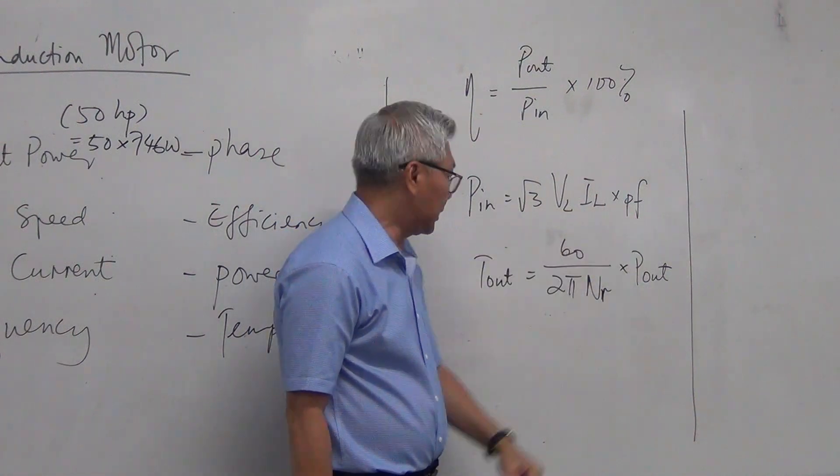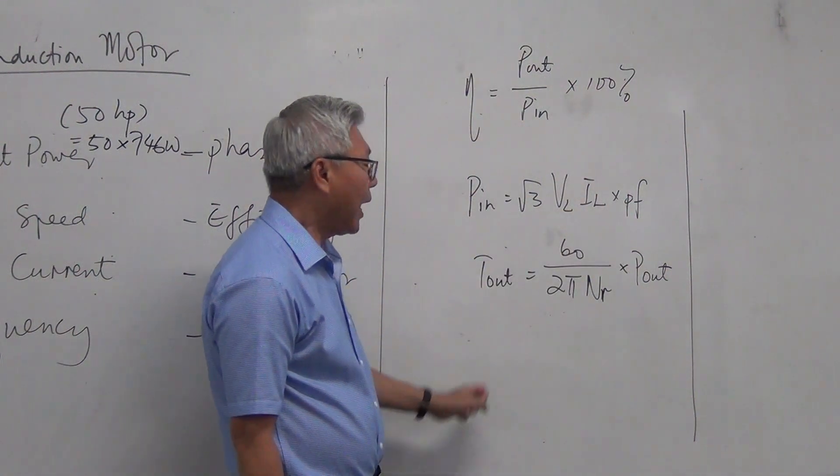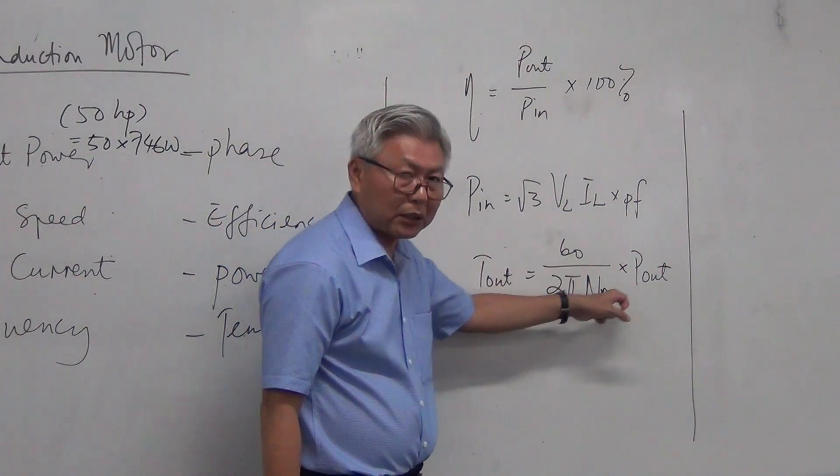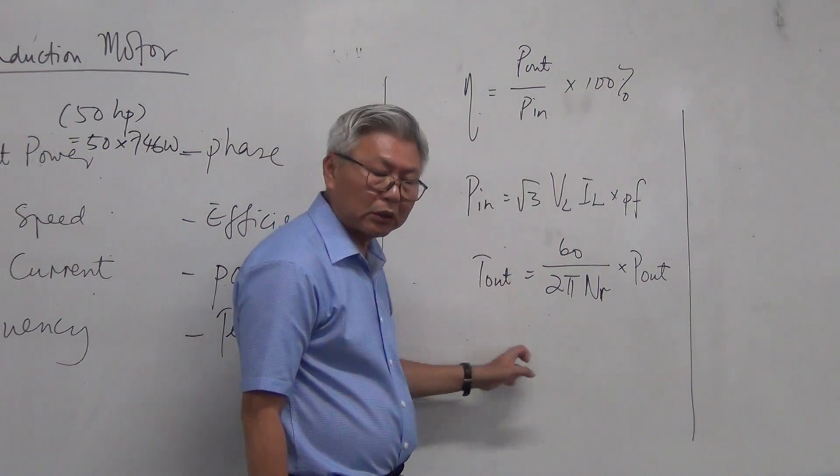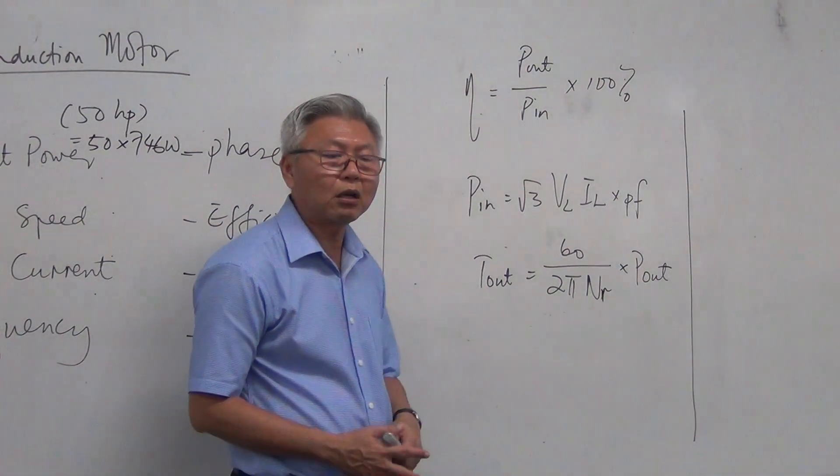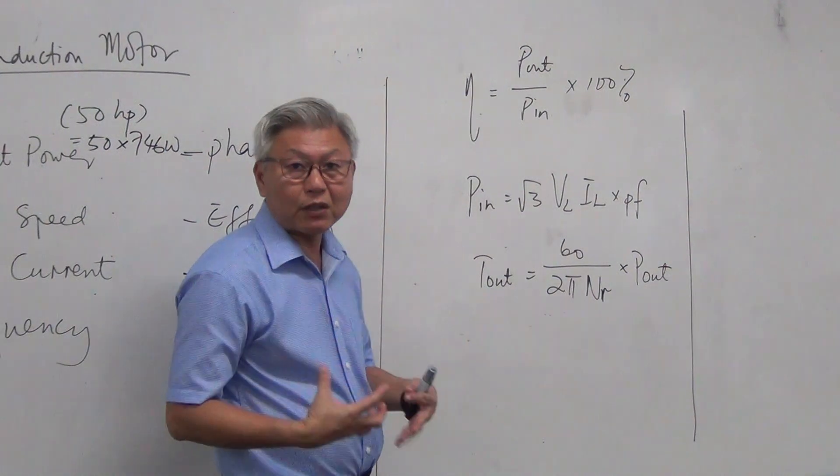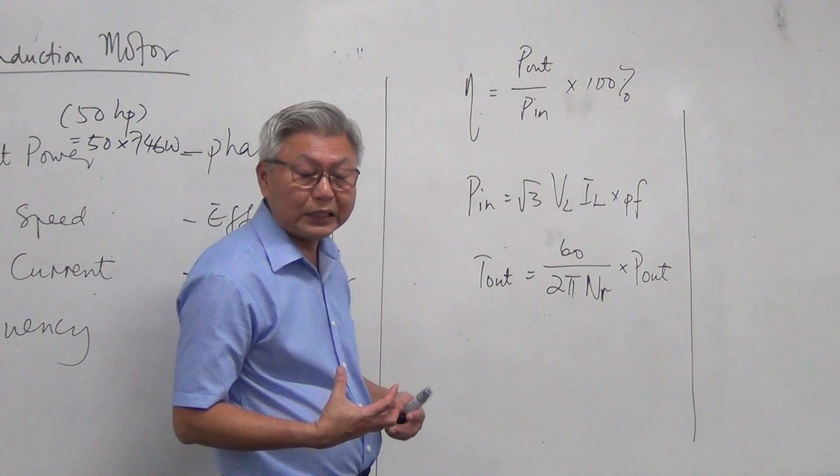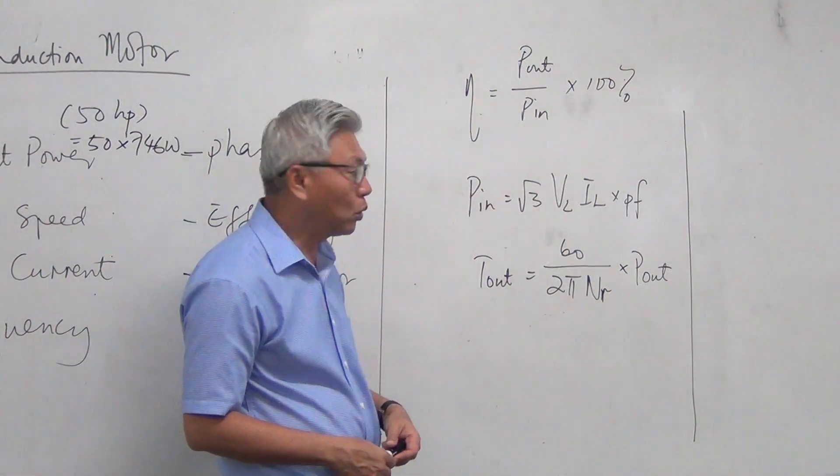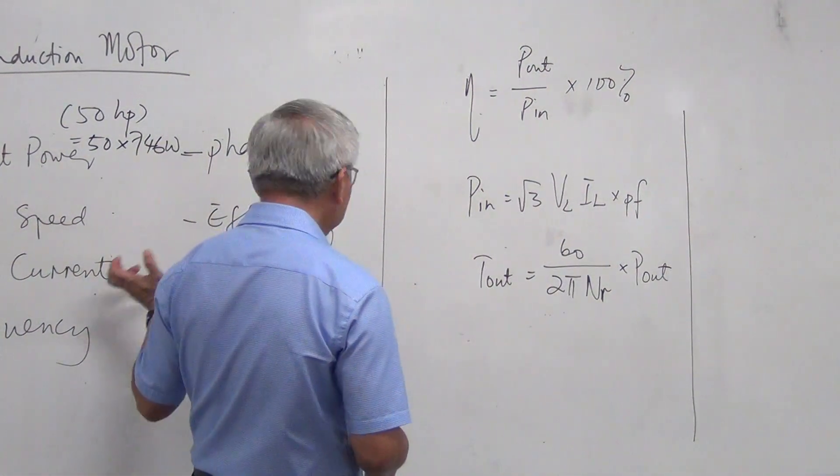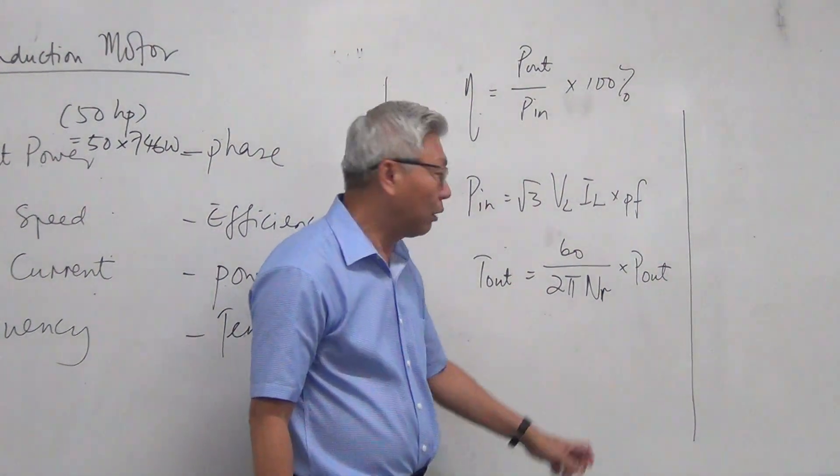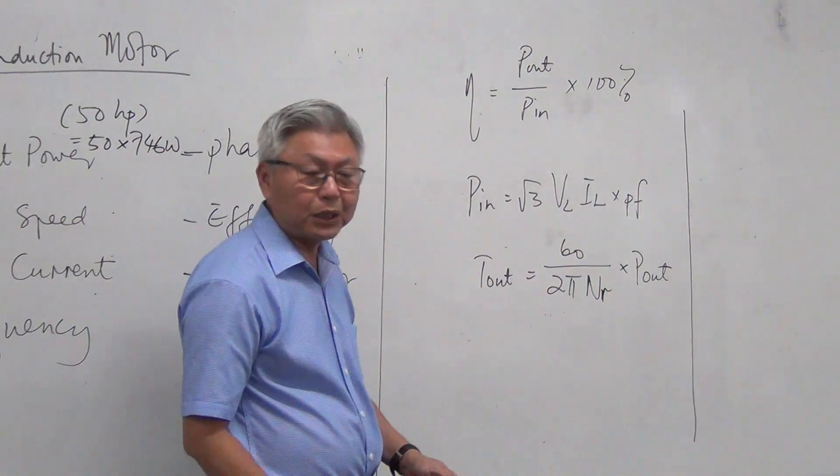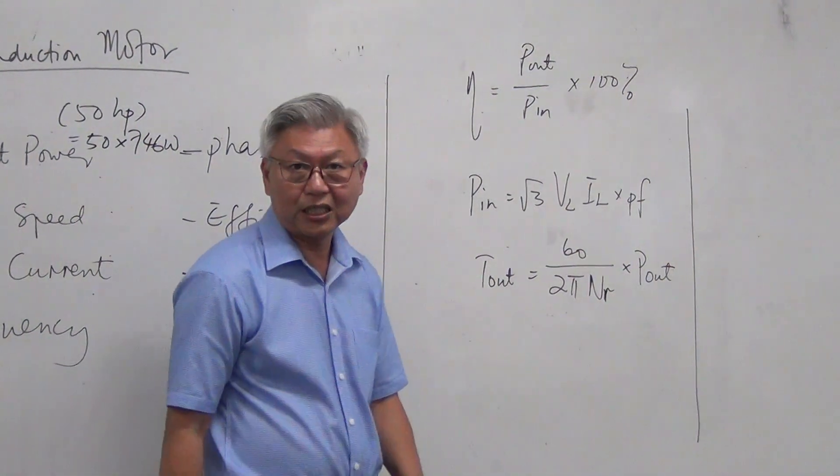And the torque formula is still the same as our DC motor. 60 over 2 pi n multiplied by output power. Now, we need to know how to calculate torque, because a lot of time when you use a motor, it's because you want to use it for certain application. So you need to size up the motor according to the work needed or the torque needed. So with the power that's given, you are able to calculate out the torque value with the speed, with the speed that you want to operate the motor at. At the particular speed, what is the torque it can take?